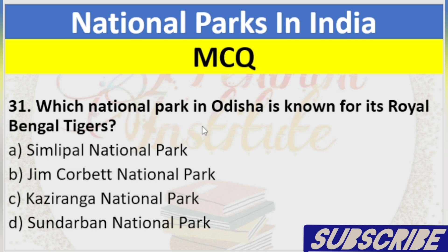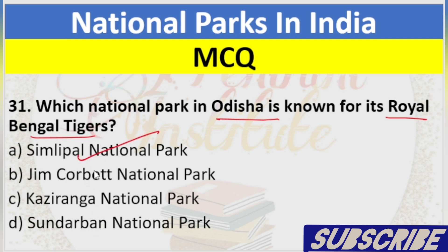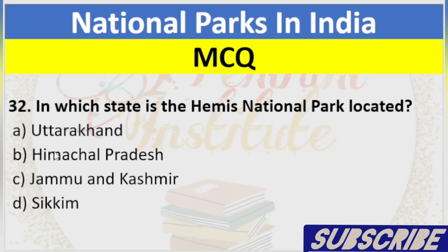Question 31: Which National Park in Odisha is known for its Royal Bengal Tigers? A. Simlipal National Park, B. Jim Corbett National Park, C. Kaziranga National Park, D. Sundarbans National Park. Answer: A. Simlipal National Park.